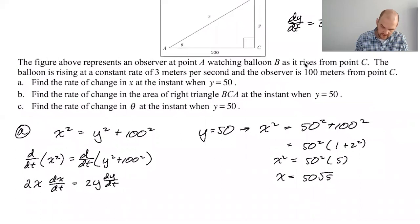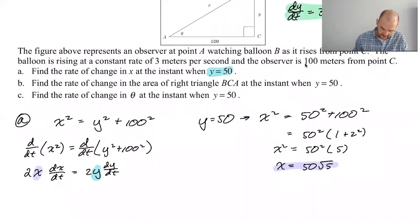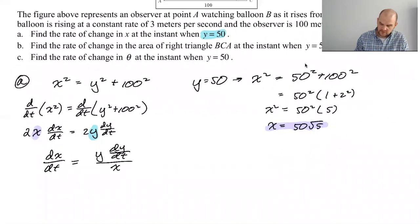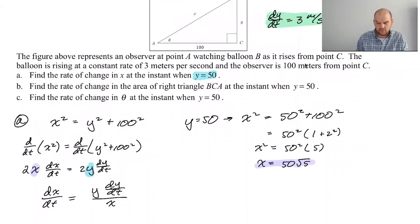So we've got some stuff we can plug in here. We know that y is going to be 50. We know that x is going to be 50 root five at the time we're interested in. And we know that dy/dt is three. So we're trying to solve for dx/dt. So dx/dt is going to be y dy/dt over x. I bet some of you out there have that memorized. It comes up really often. So like, it wouldn't be a terrible thing to memorize.